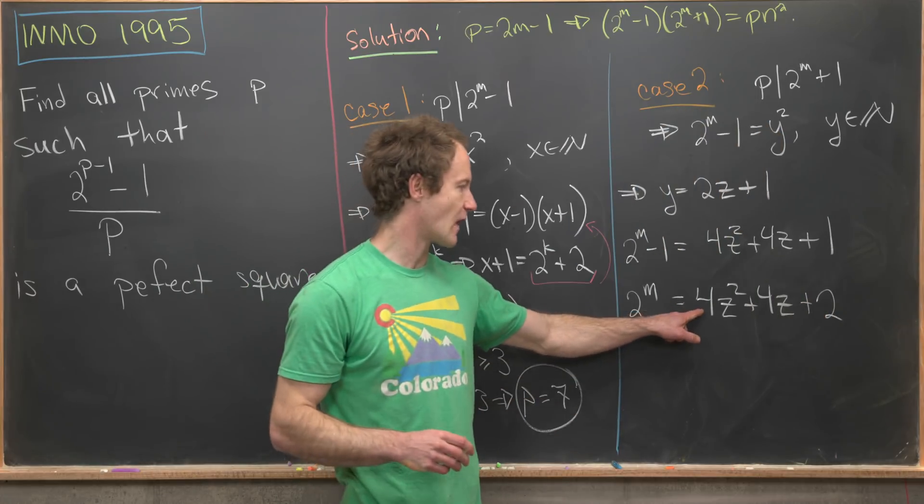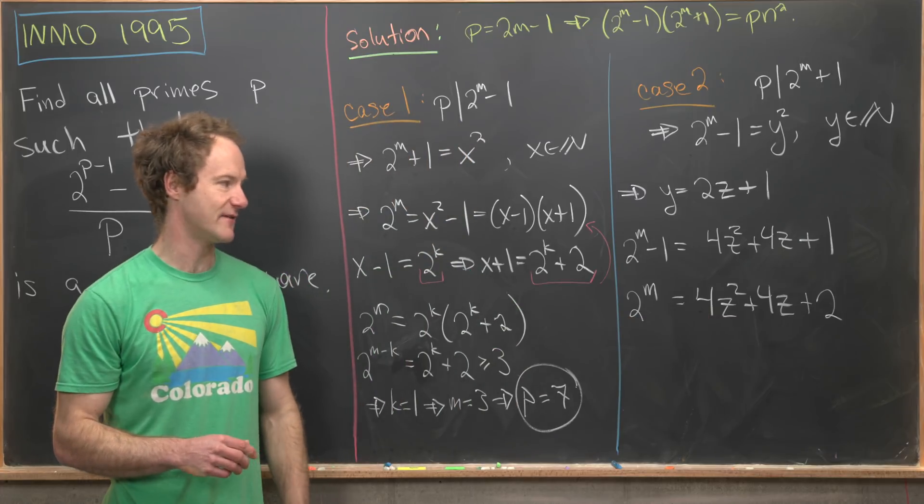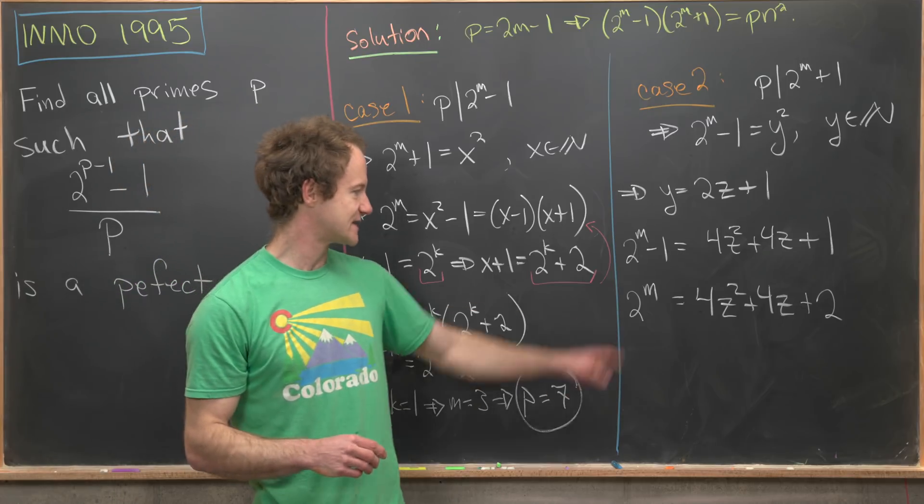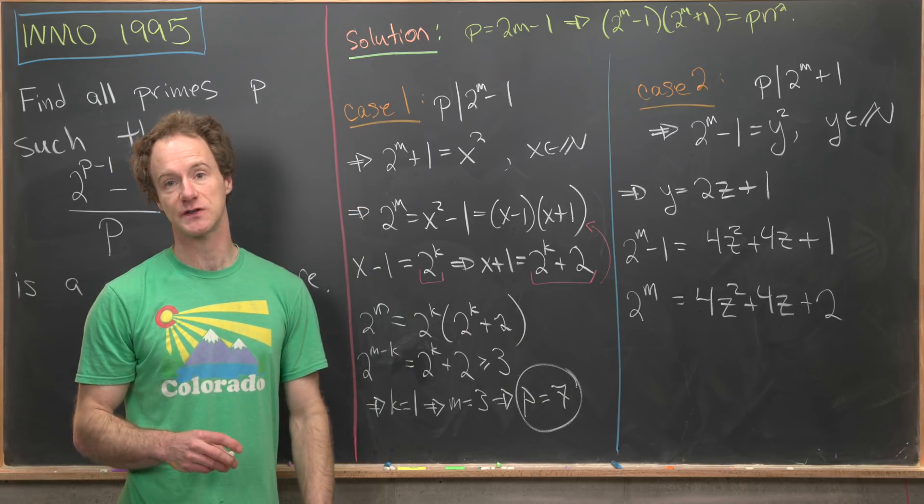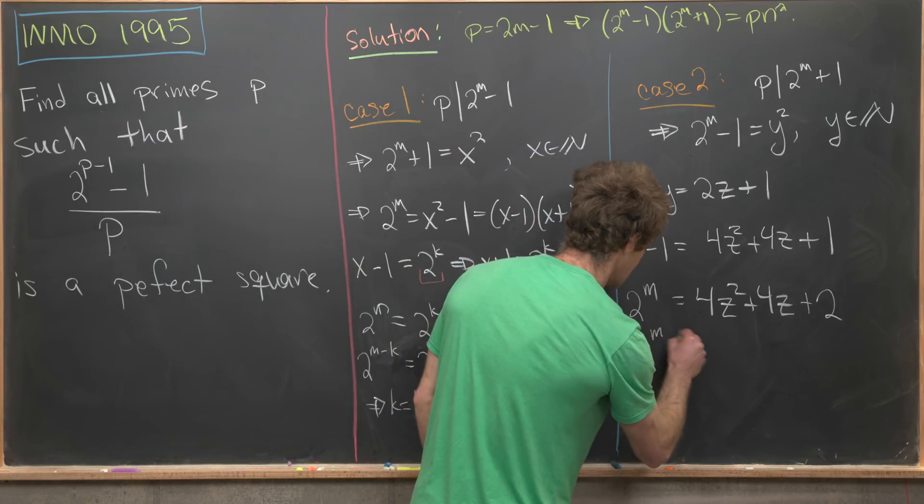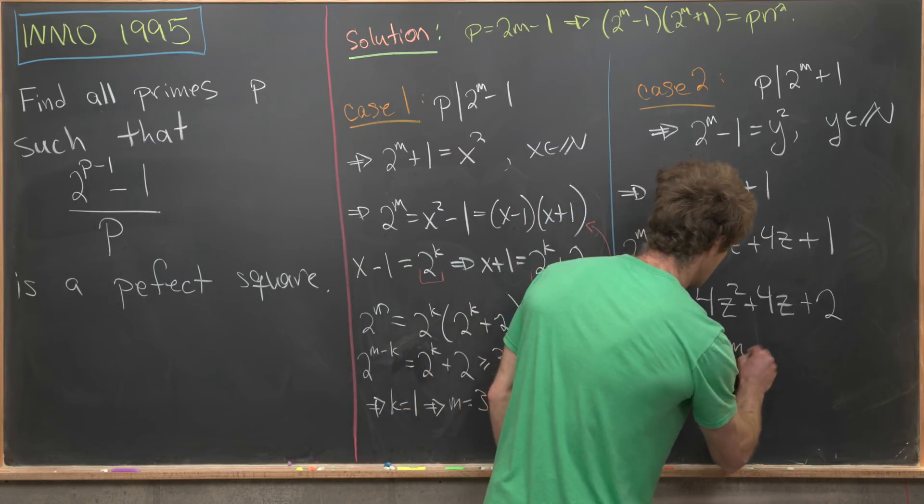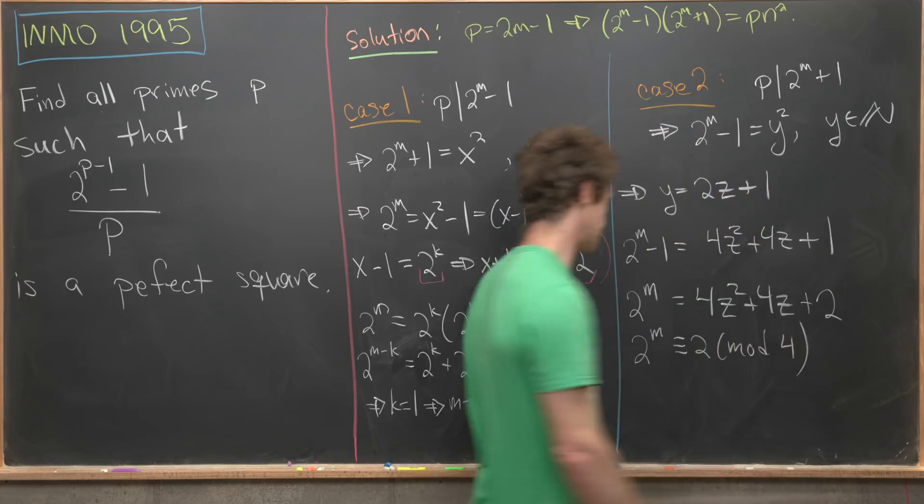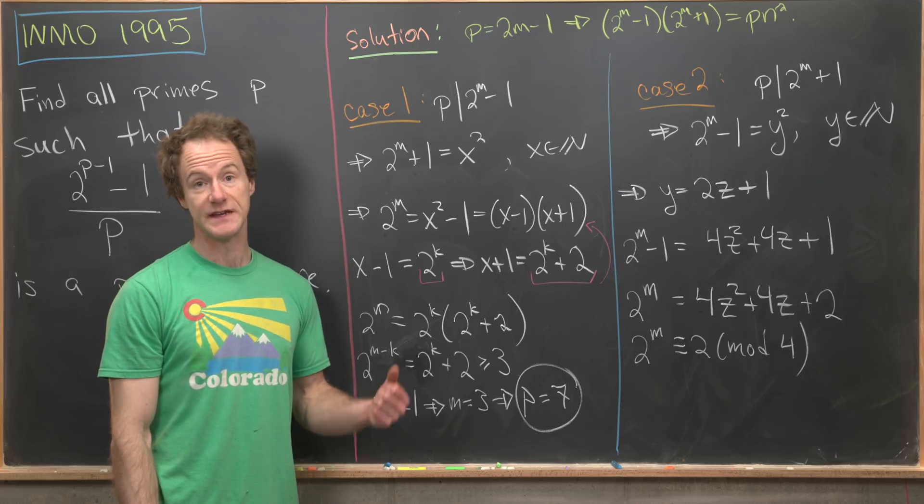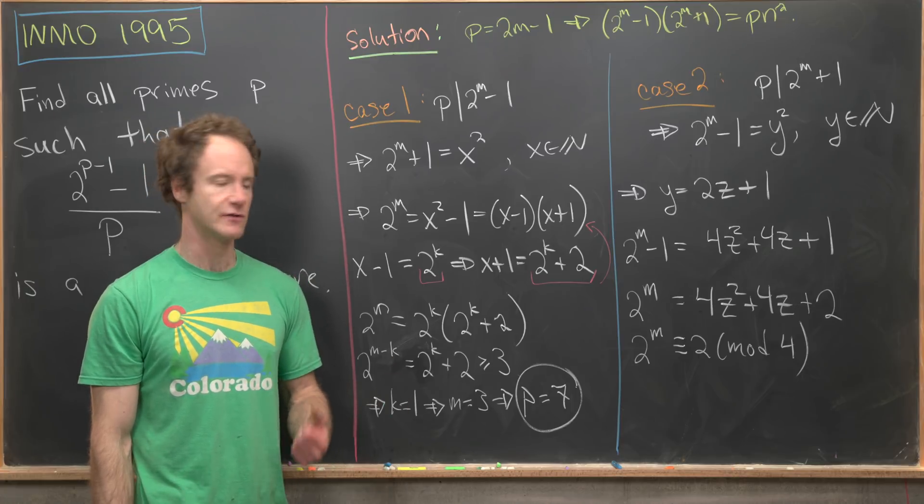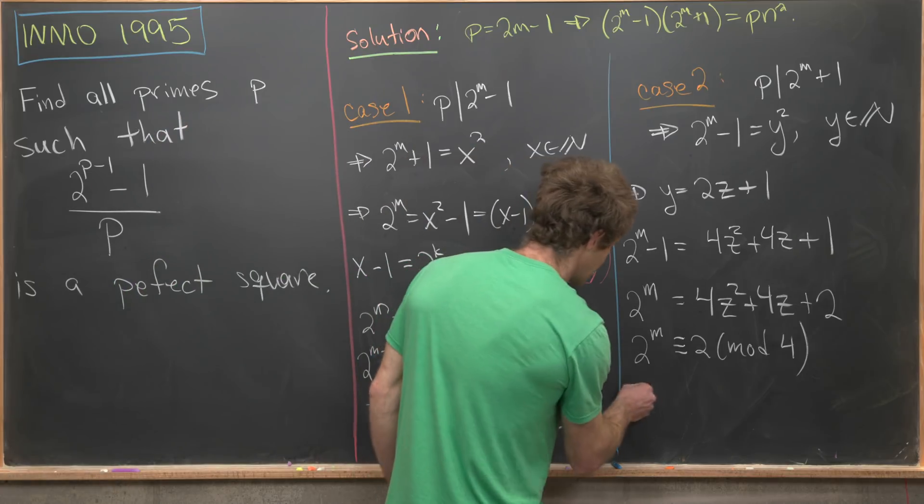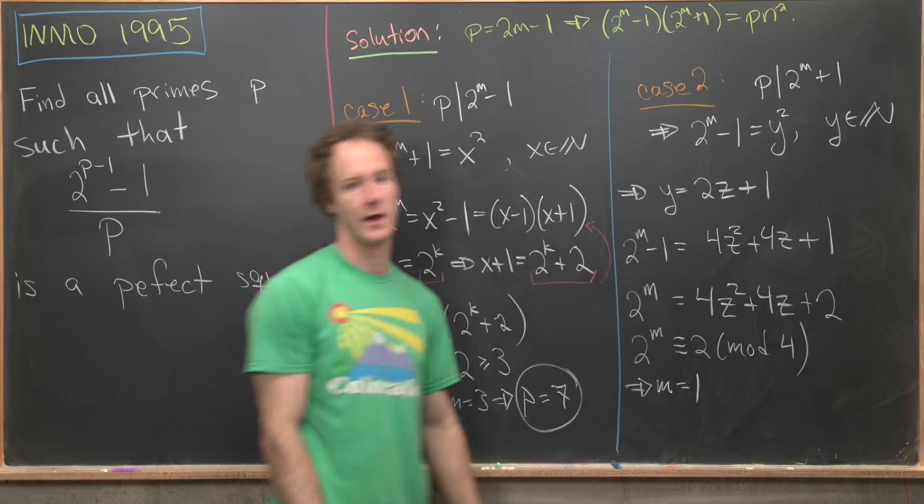We see that the right-hand side of this is most definitely congruent to 2 mod 4. But that tells us that the left-hand side must also be congruent to 2 mod 4. So we can write 2^m ≡ 2 (mod 4). But notice if m is bigger than 1, then 2^m ≡ 0 (mod 4) because it is necessarily a multiple of 4. That tells us that here, m must be equal to 1.